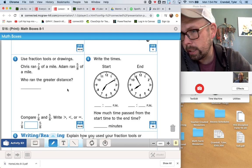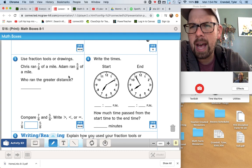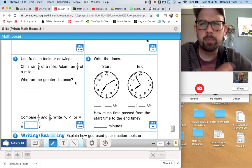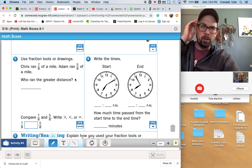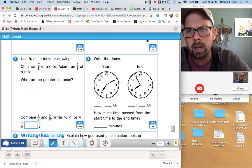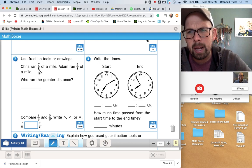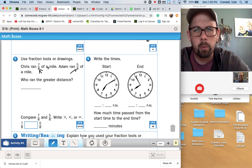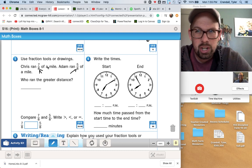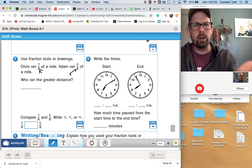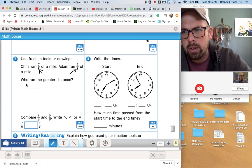Use fraction tools or drawings. Chris ran 7 eighths of a mile, and Adam ran 5 eighths of a mile. Who ran the greater distance? Without even using tools, we should be able to look at this one. It says to use tools, so we will, but I just want to think about it real quick. 7 eighths and 5 eighths, they have the same denominator. So we really can just look at the numerator, and the one with the greater numerator is the bigger fraction. Which is bigger, 7 or 8? 7. So who ran the greater distance? That's Chris.